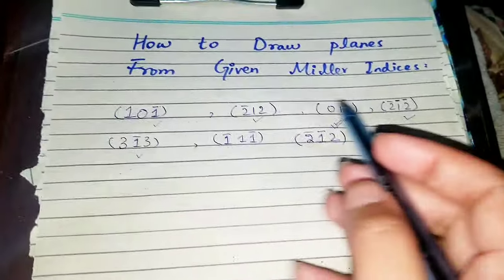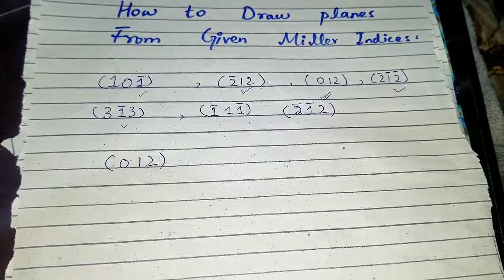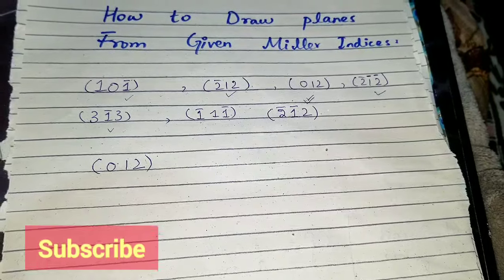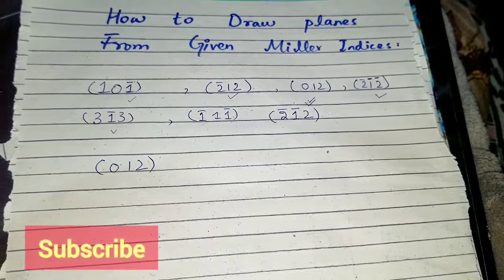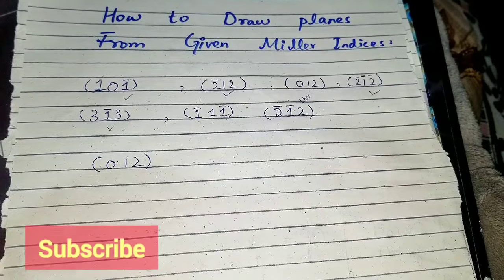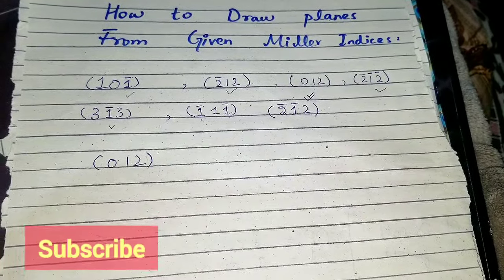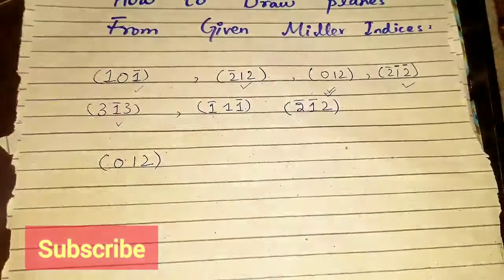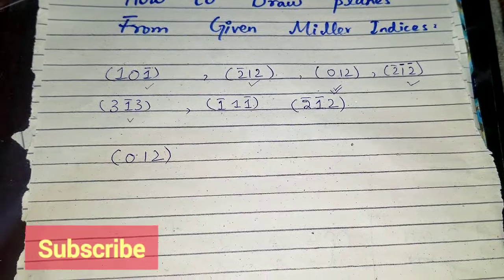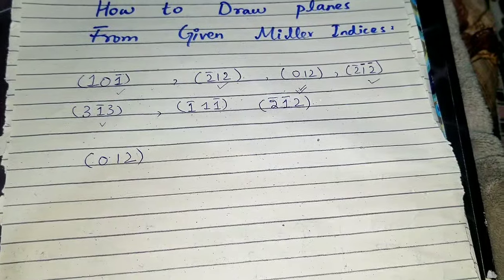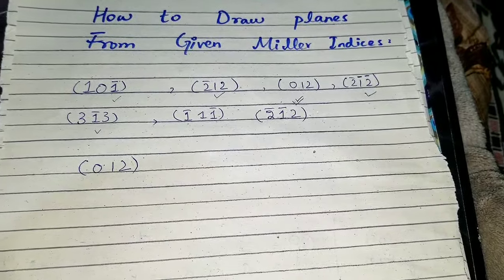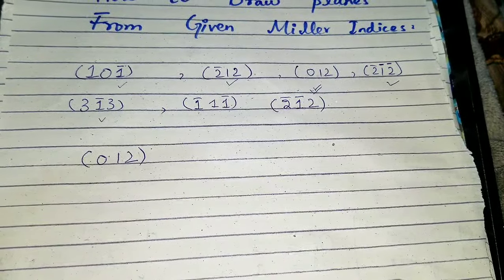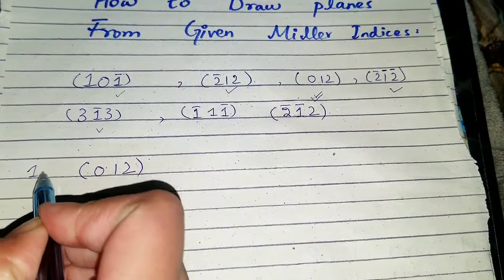First we'll do the all-positive case, which is (0 1 2). A video on how to find the Miller indices of planes is also uploaded in English, Urdu, and Hindi versions — check out the playlist. I've also uploaded a video where we draw directions from given Miller indices, covering all kinds of cases with a simple method.